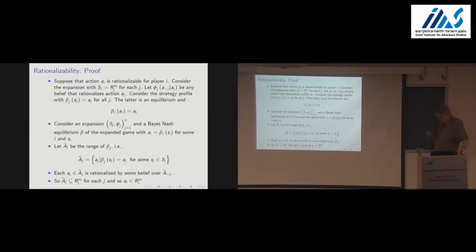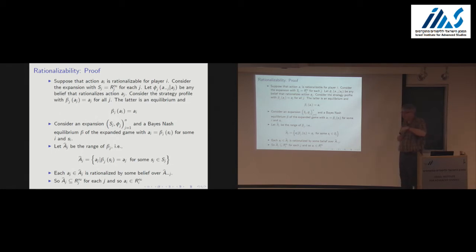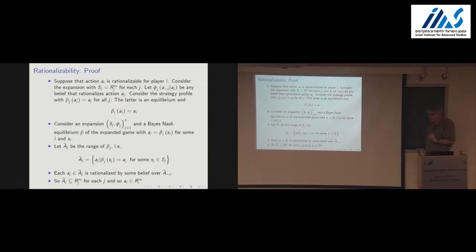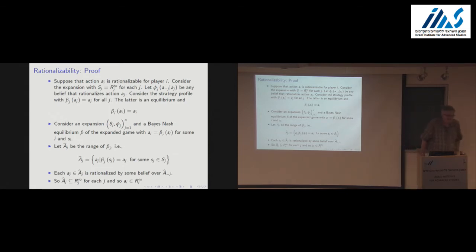In a famous example, if the game is supermodular — a game of strategic complementarities where you want to choose a higher action if others choose higher actions — then doing iterated deletion of strictly dominated strategies leaves a largest and smallest surviving action profile. It's a Nash equilibrium for everybody to play the highest rationalizable action or the lowest rationalizable action, and that is a correlated equilibrium. So that would be an example where they're essentially the same — and there's going to be an example of that today.